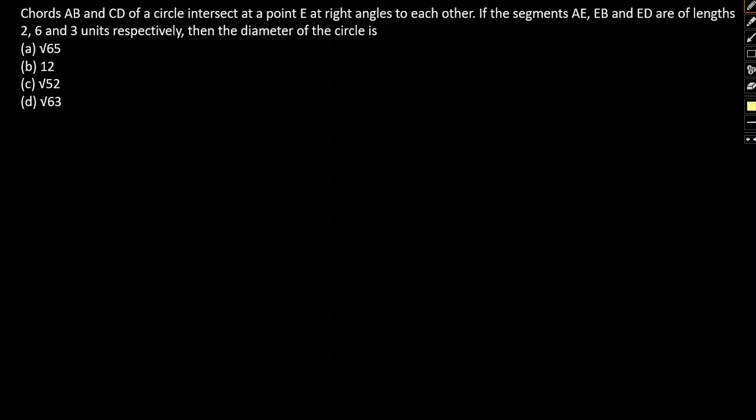So let's take a look at the question in the video. Chords AB and CD of a circle intersect at a point E at right angles to each other. If the segments AE, EB and ED are of lengths 2, 6 and 3 units respectively, then the diameter of the circle is... So this is the figure for the question. Let's take a look at how the figure is going to look like.